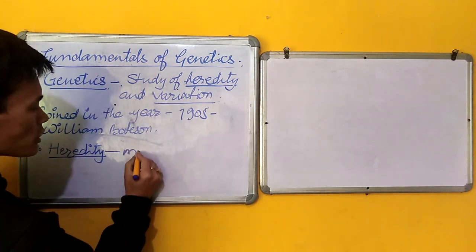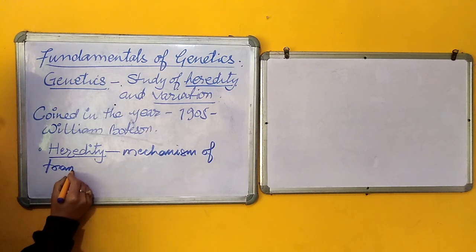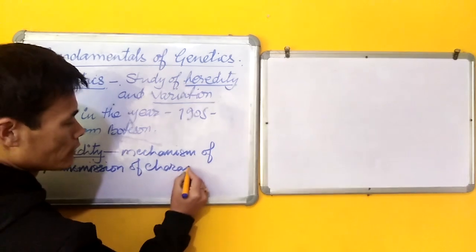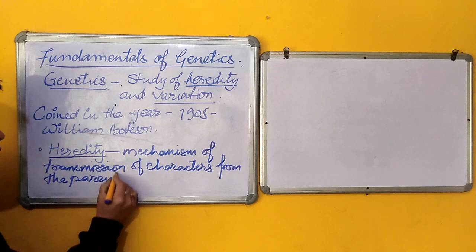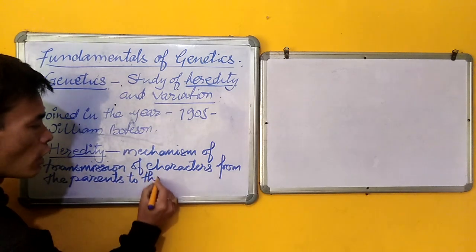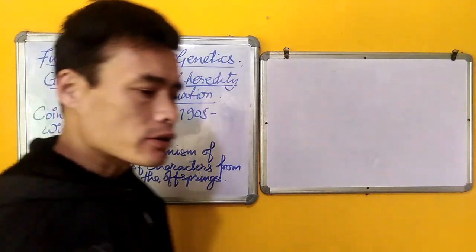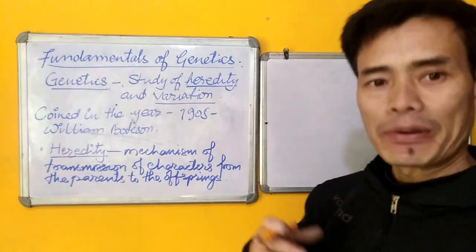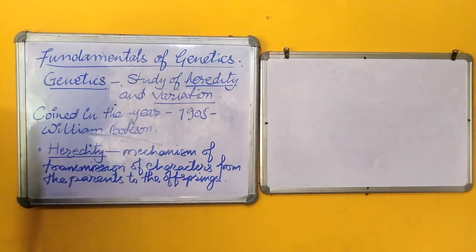Coming to heredity, it is the mechanism of transmission of characters from the parents to the offspring, which means whatever characteristics that an individual possesses is actually transmitted from their parents. So heredity is that mechanism by which the transmission of the characters takes place from the parents to the offspring for any species.